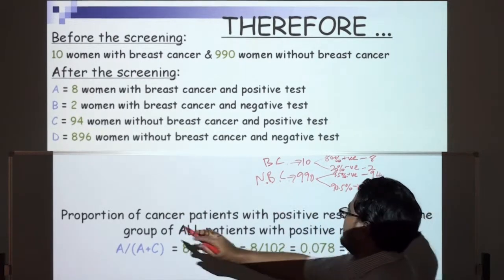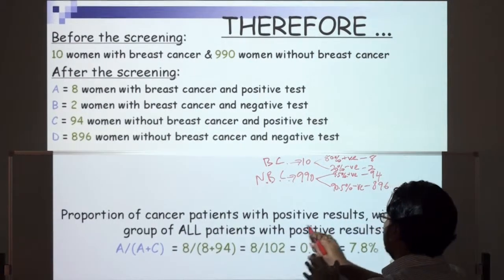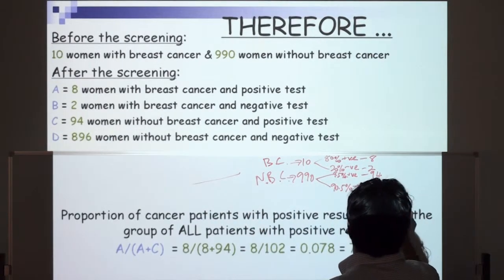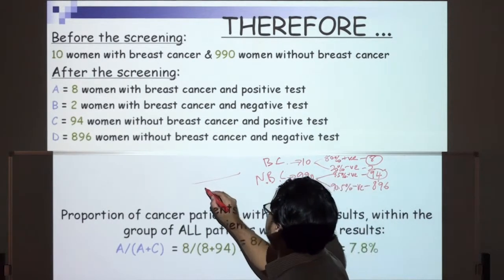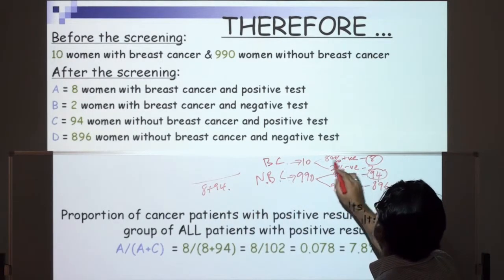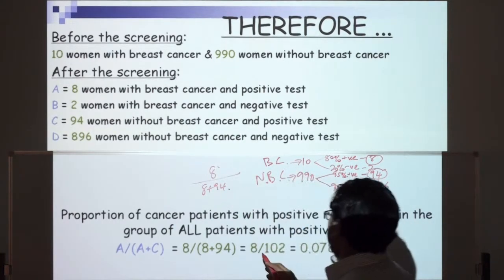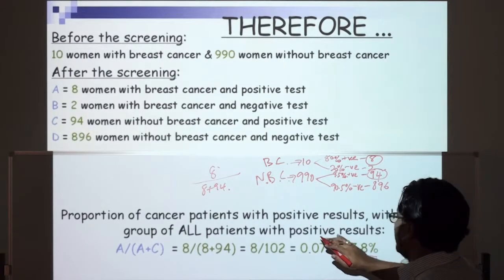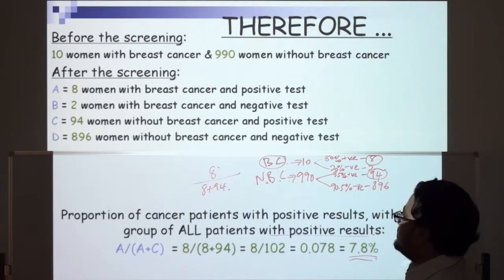The proportion of cancer patients with positive results within the group of all patients with positive results: everyone with a positive result is 94 plus 8 equals 102, and the women with a positive result and breast cancer is only 8. Therefore, 8 divided by 102 gives 7.8% of women with positive results who also have breast cancer.